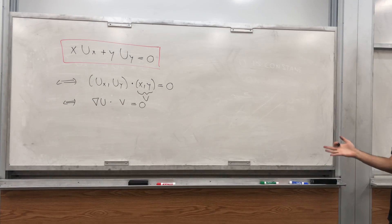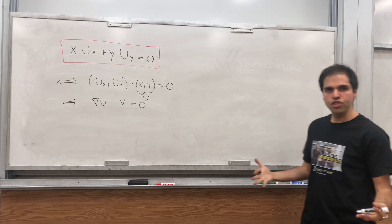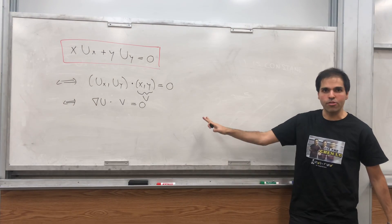So, in this case, the directional derivative of u along v is still zero.